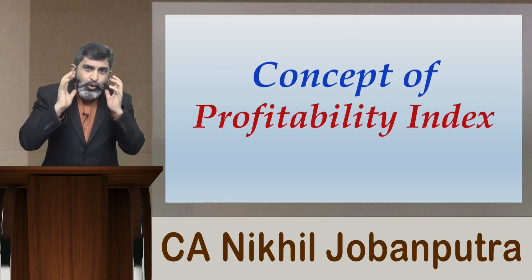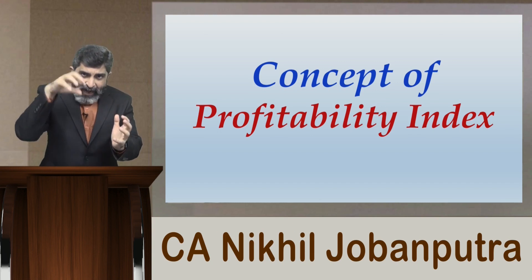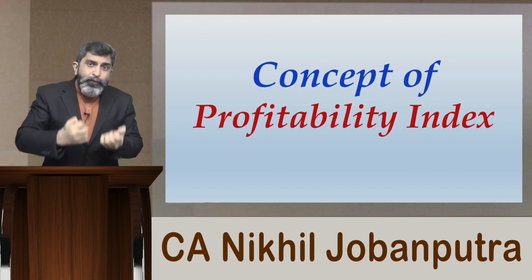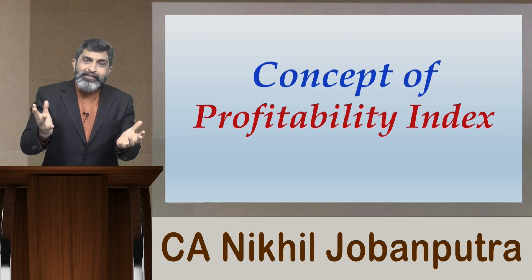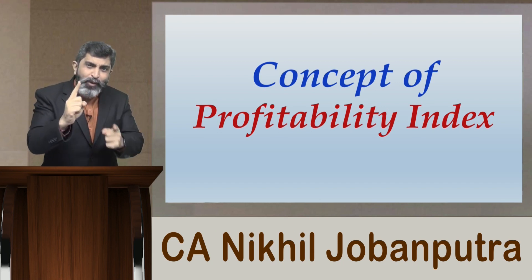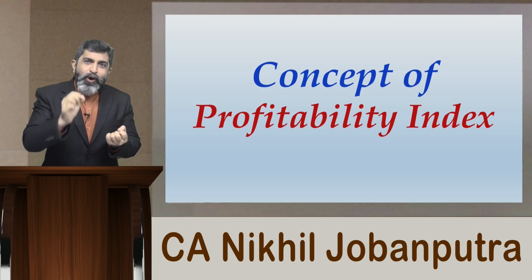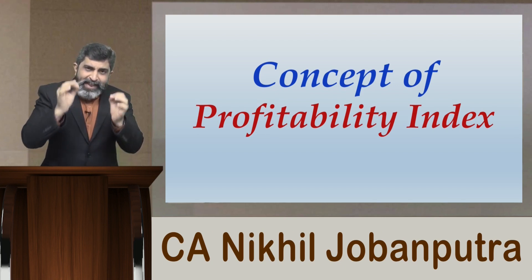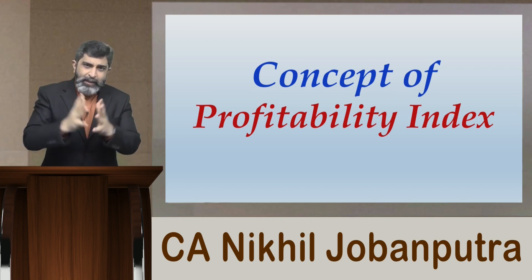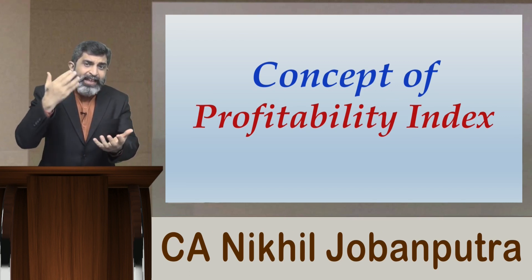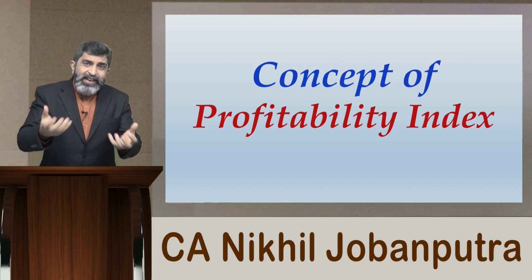How do you interpret a value of 1.2? It means that for a total outflow at present of rupees 10 lakhs, the total inflow value at present is 12 lakhs — that is, for every 1 rupee of outflow from your pocket, you are getting an inflow of 1 rupee 20 paisa. That is the interpretation of profitability index.